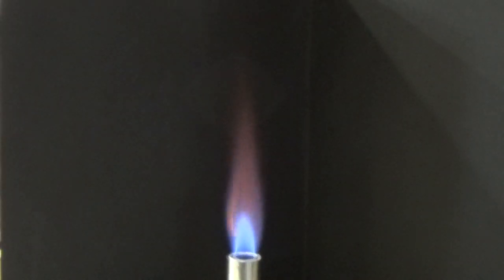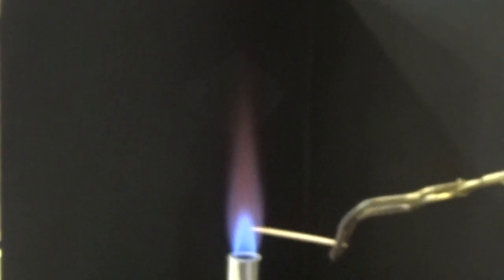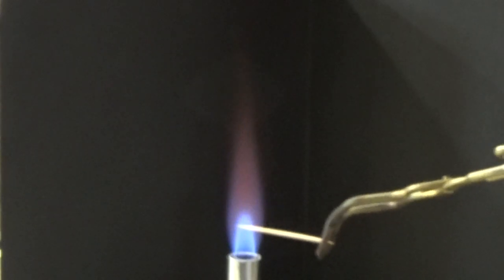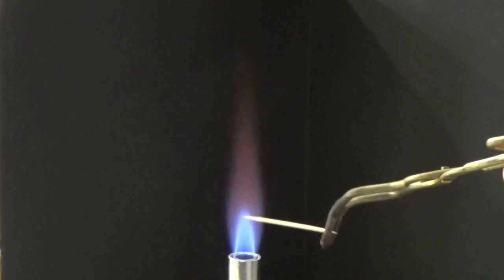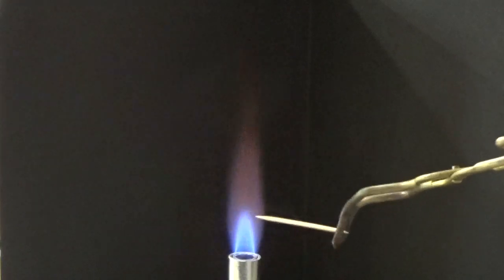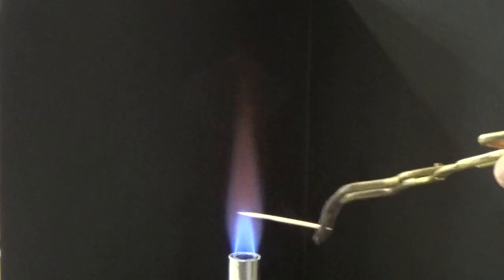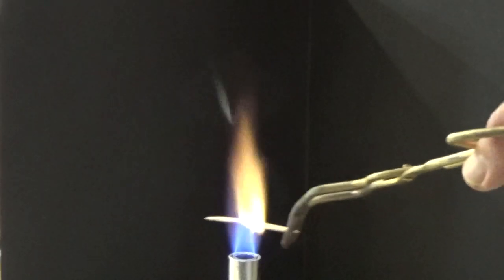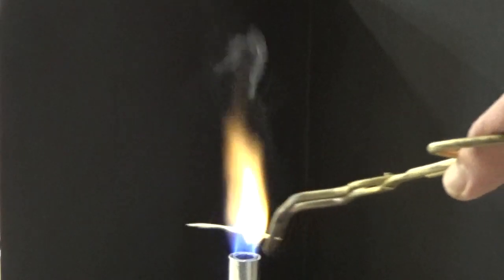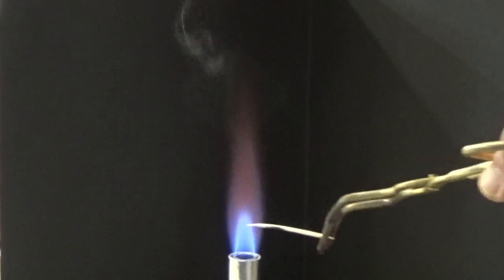Next up we have barium chloride. We'll put it down at the lower part of the flame again so we don't burn the toothpick so quickly. That's interesting. I don't know if you're picking that up on camera, but that's a lime green yellow color. Beautiful, very interesting. Lime green yellow color there.